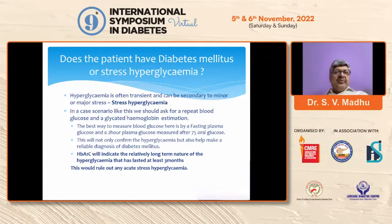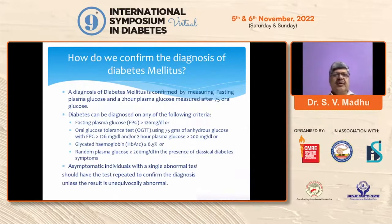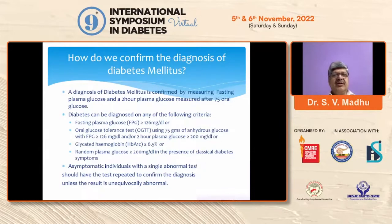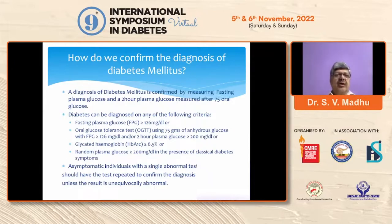Based on blood glucose measurements, how do we make a diagnosis of diabetes? A diagnosis of diabetes mellitus is confirmed by measuring fasting plasma glucose and a two-hour plasma glucose after 75 grams oral glucose. Diabetes can be diagnosed by any of the following criteria: a fasting plasma glucose equal to or greater than 126 mg/dL even without doing an OGTT; if an OGTT is done, a two-hour plasma glucose of greater than or equal to 200 mg/dL; or a glycated hemoglobin of greater than or equal to 6.5%. If the patient has classical diabetes symptoms, even a random plasma glucose of more than 200 mg/dL would suffice for a diagnosis.